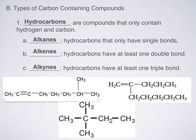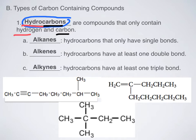Let's talk about the different types of carbon-containing compounds. The first and most influential type of organic compound is called a hydrocarbon. The word hydrocarbon is exactly what it sounds like: hydro for hydrogen, and carbon for carbon. They contain only hydrogen and carbon. That's what makes them different from all other types of organic compounds. Hydrocarbons are the simplest type of organic molecule.